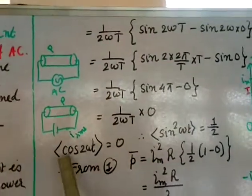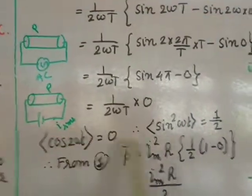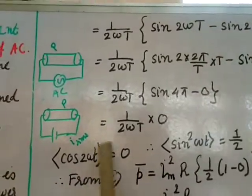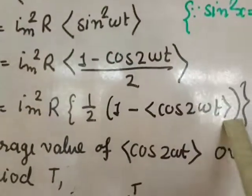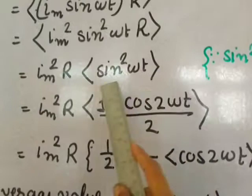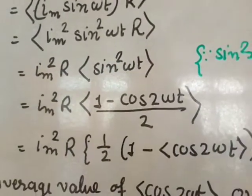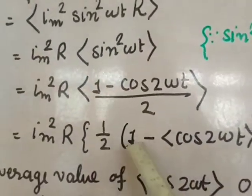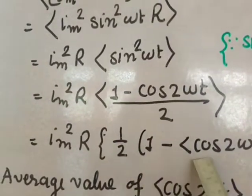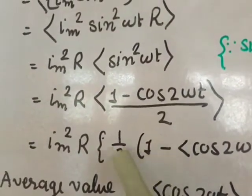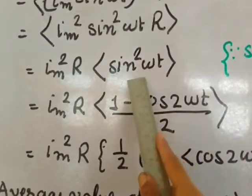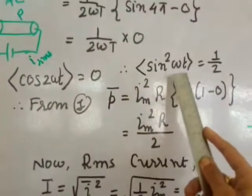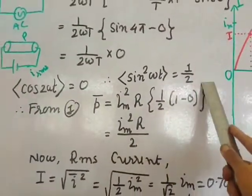We have found that the average of cos(2ωt) equals 0. Substituting this back, the average of sin²(ωt) = (1/2)(1 − 0) = 1/2. So the average of sin²(ωt) is equal to 1/2.